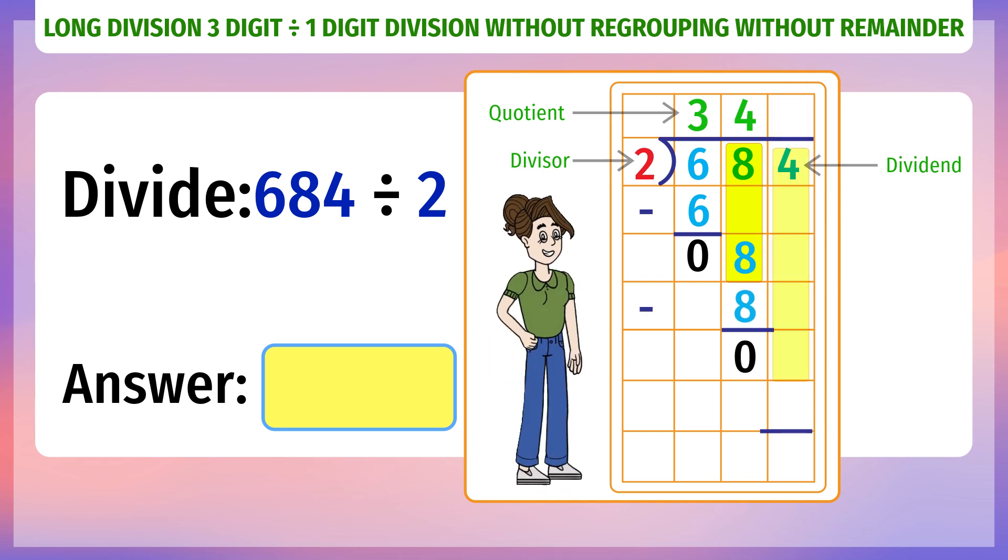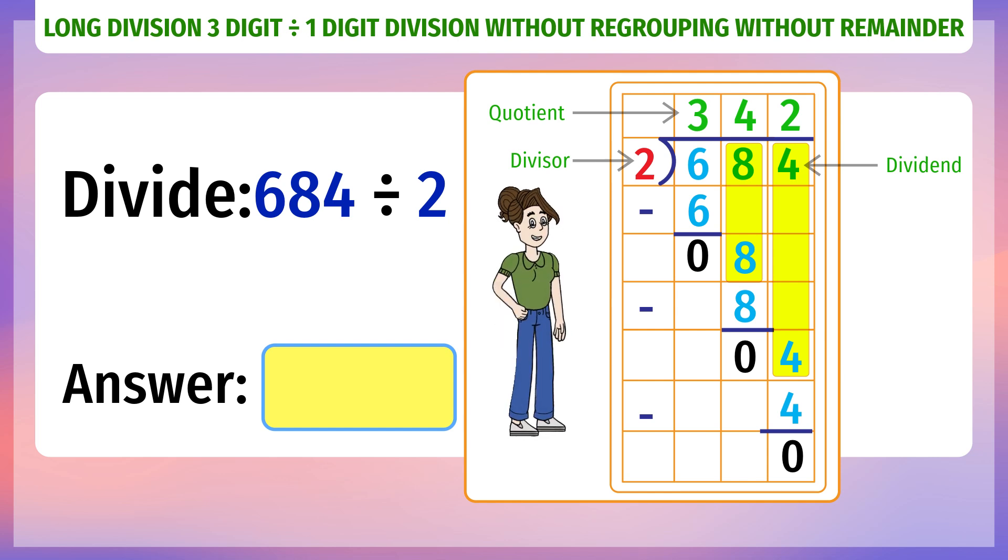Next digit of dividend, 4. 4 divided by 2 is 2. Write 2 in quotient space. Write 2 into 2, 4 below 4 of dividend. Subtract 4 minus 4 to get 0. Division is complete.